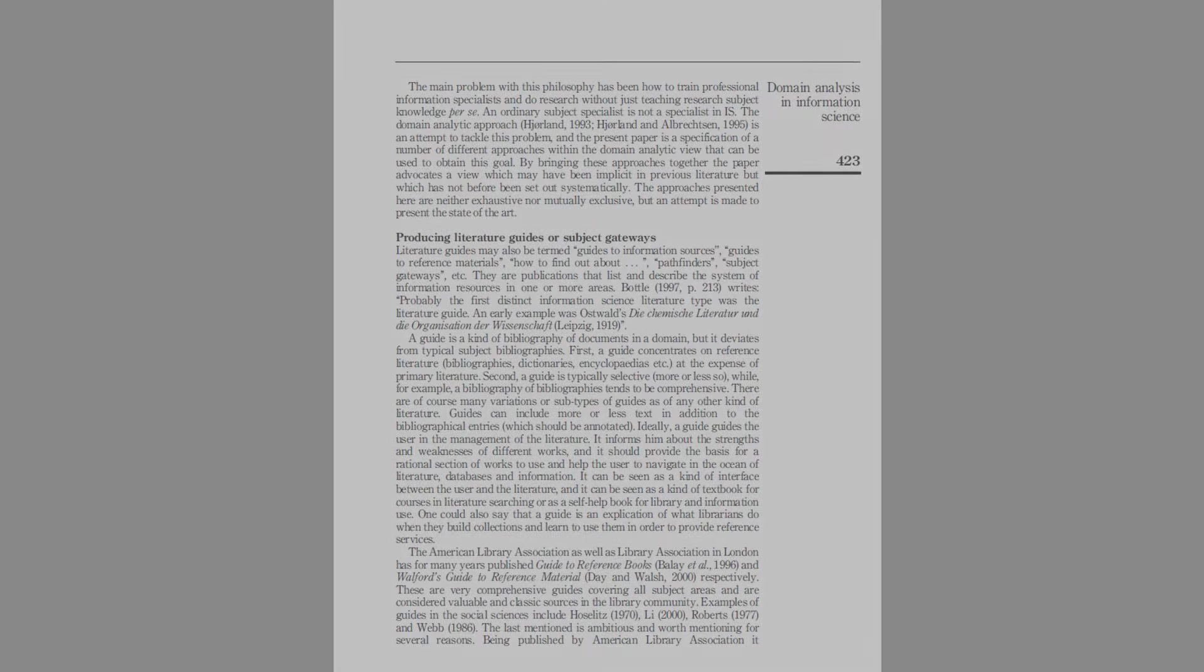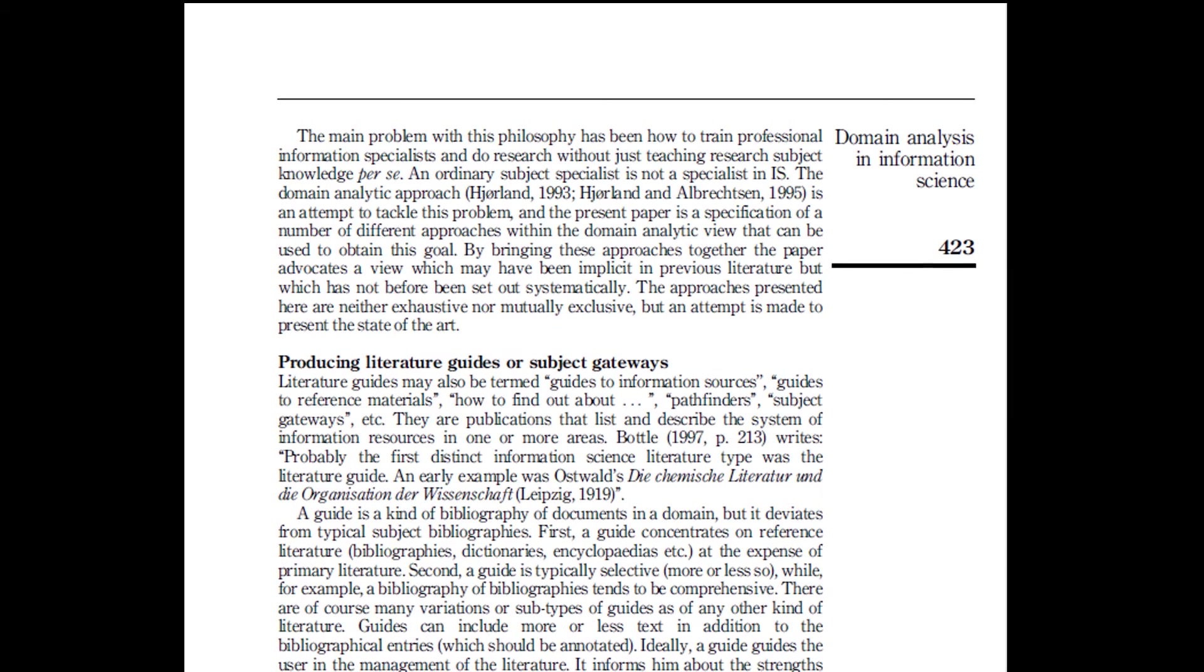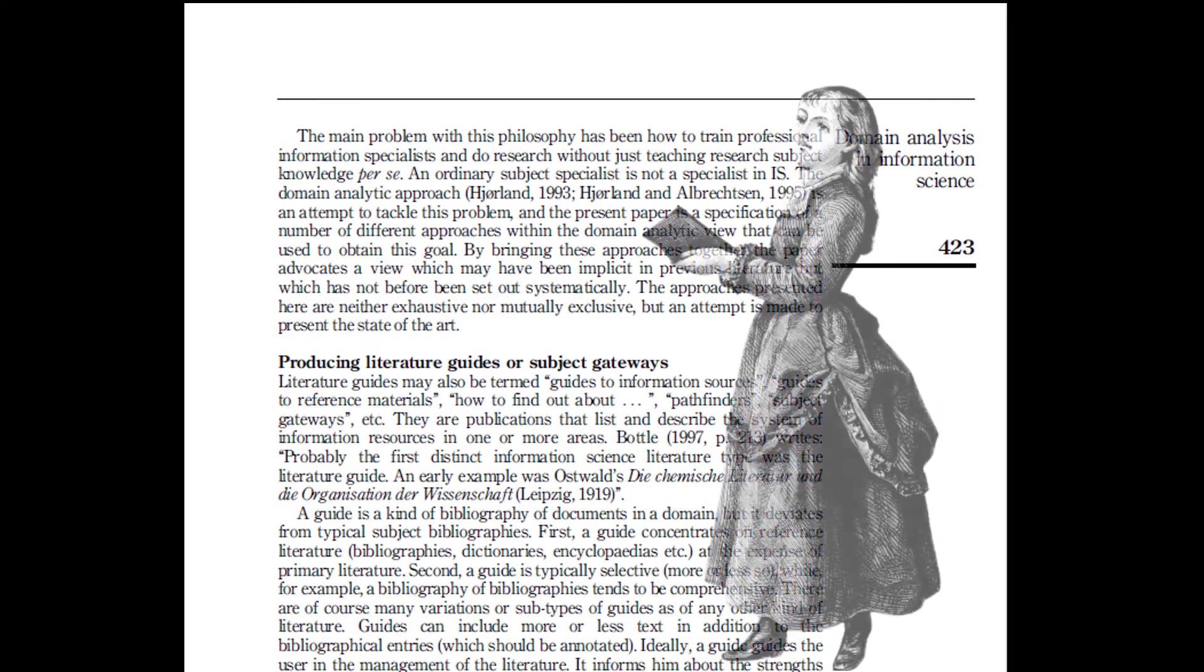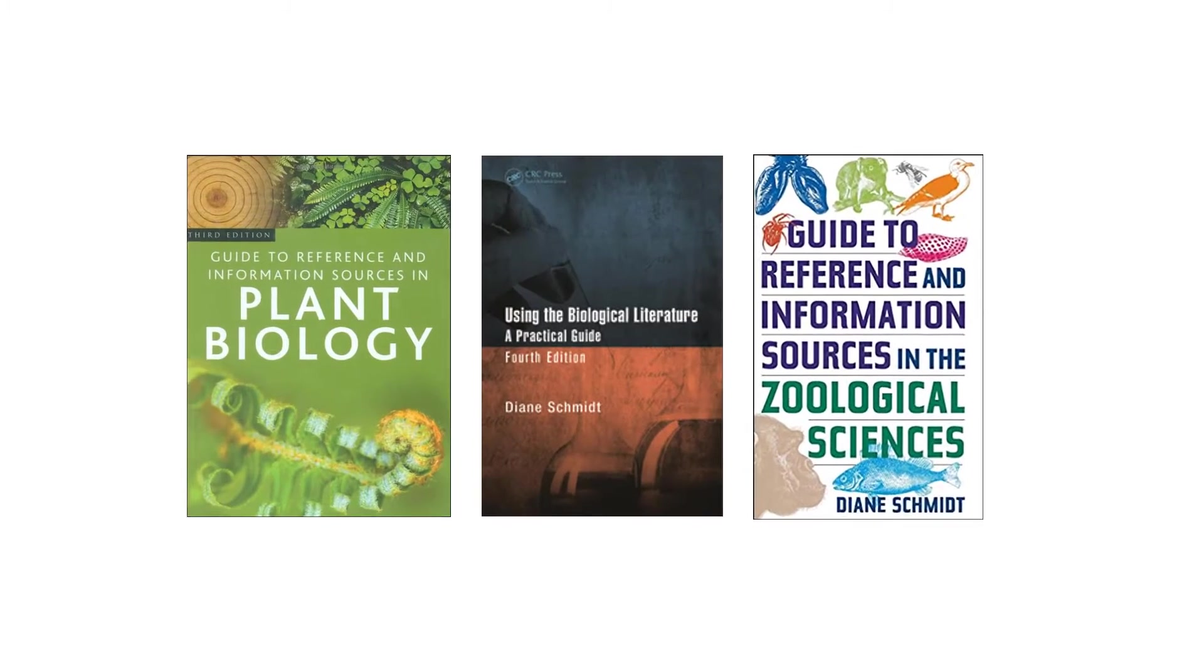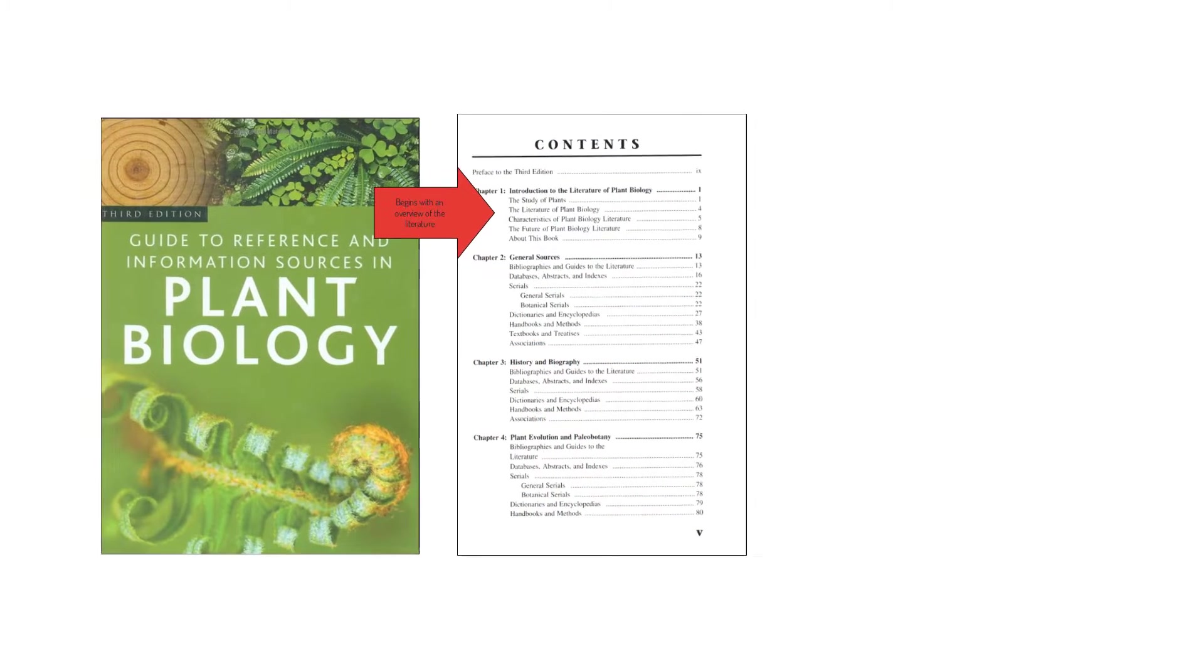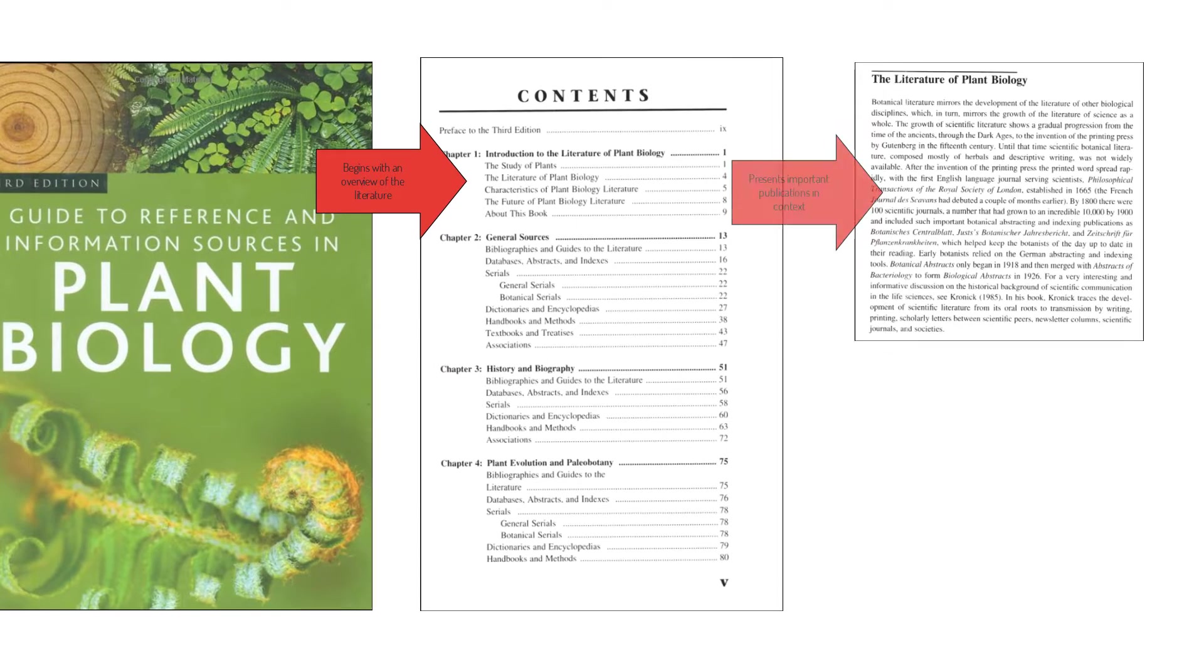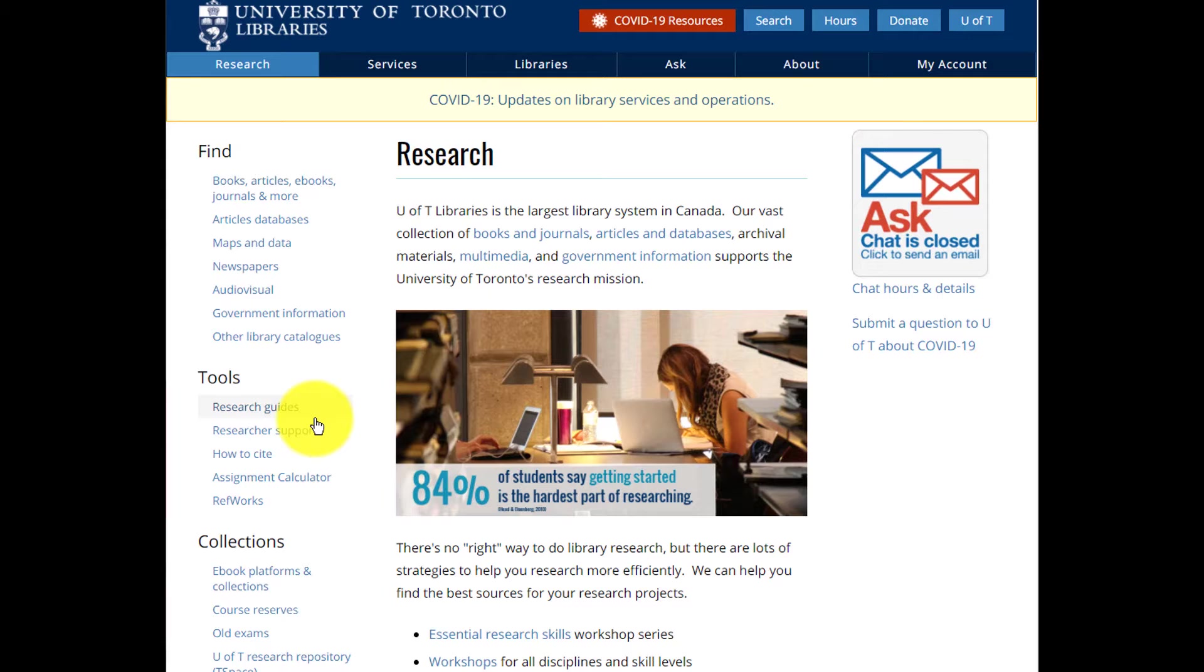It should come as no surprise that the first approach is producing literature guides or subject gateways, for this is a long-standing expertise of librarians. Literature guides are also called pathfinders or subject gateways, and they list and describe the system of information resources in one or more areas. Resources are usually annotated with short descriptions. Today, there are far more web-based pathfinders usually produced locally by librarians.